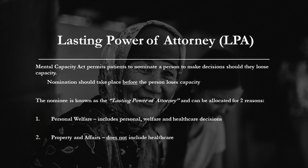The Mental Capacity Act also permits patients to nominate an individual whom they trust to make important decisions on their behalf should the patient lose capacity at some point in the future. Nomination of this individual should take place prior to the patient's loss of capacity. Two forms of lasting power of attorney exist: lasting power of attorney for personal welfare, which encompasses a broad range of decisions inclusive of healthcare, and lasting power of attorney for property and affairs, which does not provide authority for healthcare. This is a significant difference which healthcare professionals must demonstrate awareness for.